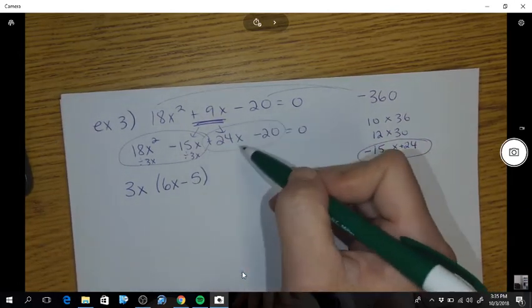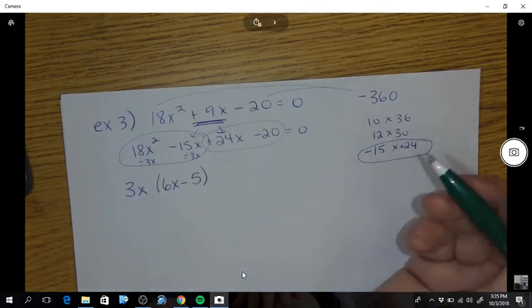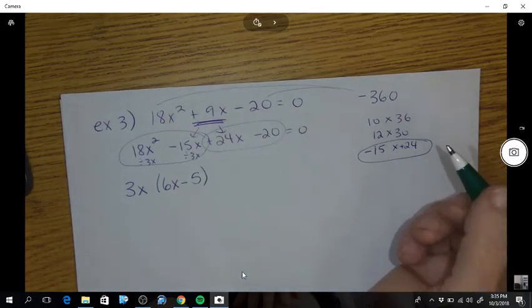So if you divide this by 3x, you have a 6x left. If you divide that by 3x, you have a minus 5.